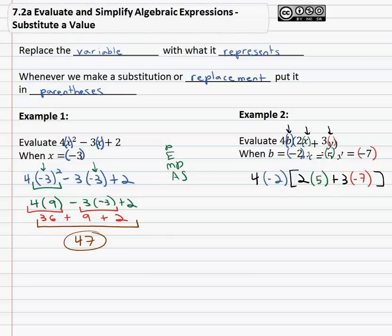So now, simplifying the expression inside parentheses first, the multiplication that doesn't overlap. We've got 4 times negative 2 times 2 times 5, which is 10, plus 3 times negative 7, which is negative 21.